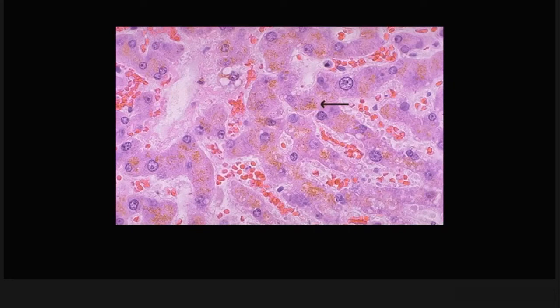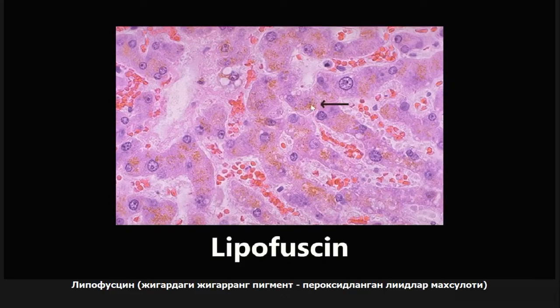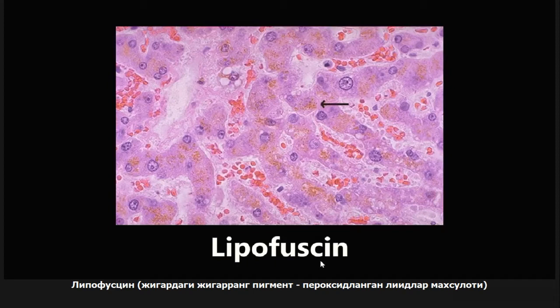This next one is an example of lipofuscin, seen in hepatocytes in the liver cells. It's a brown pigment that is a byproduct of turnover of peroxidized lipids. That is important to know — I have seen questions on it. Lipofuscin is a byproduct of turnover of peroxidized lipids.